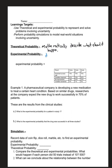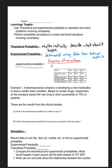This whole lesson is really about comparing theoretical and experimental probability. Experimental probability is determined using data from tests or experiments. Another way to express it is with an equation: the frequency of an outcome divided by the total number of trials.